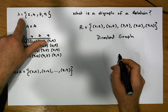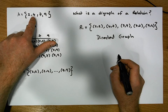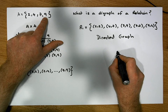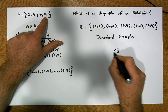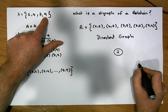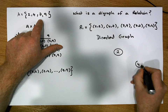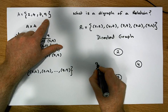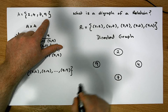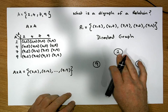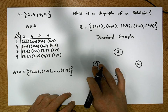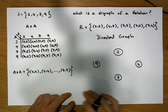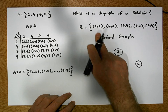In our case, the relation was built on the set A that contains 2, 4, 7, and 9. So we create a number of nodes: the node 2, the node 4, the node 7, and the node 9. These are all of the elements that are in the set that the relation was built on.